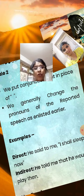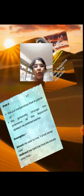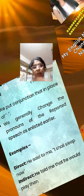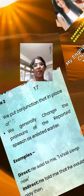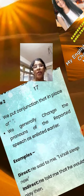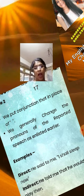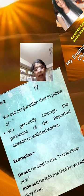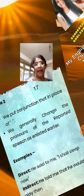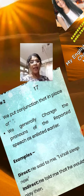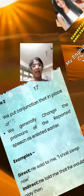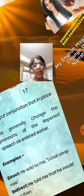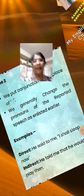Rule 2: We put conjunction 'that' in place of the comma, and we generally change the pronoun of the reported speech as listed earlier. Example — Direct: He said to me, 'I shall sleep now.' Indirect: He told me that he would sleep then.